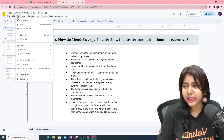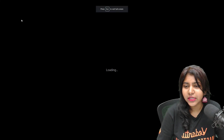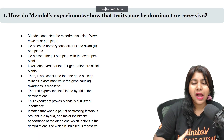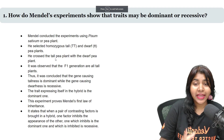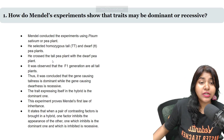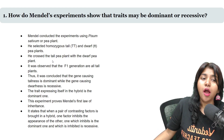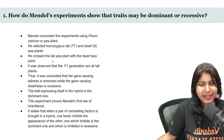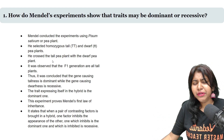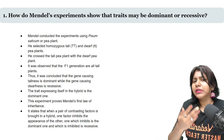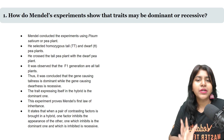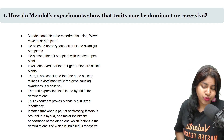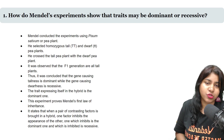So the first question comes here. They are asking us: how do Mendel's experiments show that traits may be dominant or recessive? So in Mendel's experiment, how do we determine whether a trait is dominant or recessive? That's what we need to explain.